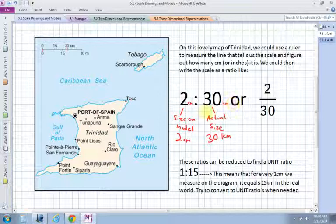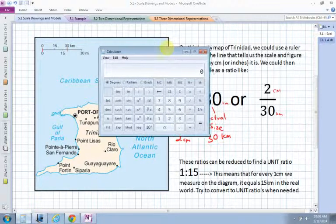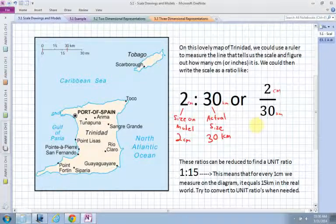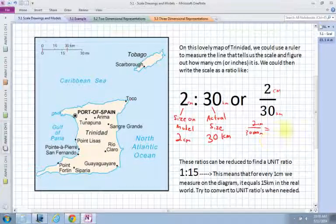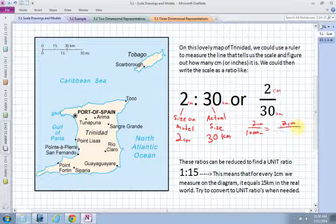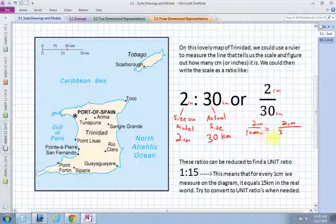Sometimes this happens, typically with maps. You'll have a ratio of 2 centimeters to 30 kilometers, so the units are completely different. You could convert kilometers to centimeters, but then you would have a very, very large number because you would have to convert 30 to meters first. How many meters are in a kilometer? 1,000, right? So you'd have 2 to 30,000 meters. Then I would have to convert that to centimeters. How many centimeters are in a meter? 100, right? So you have to multiply this by 100.